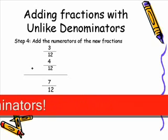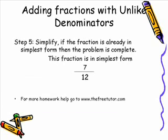Then we proceed to Step 5, which simply states that we simplify our fractions. We simplify if needed; if the fraction is already in the simplest form, then the problem is complete. As you can see, this fraction 7 twelfths is already in simplest form. And those are the steps for adding fractions with unlike denominators.